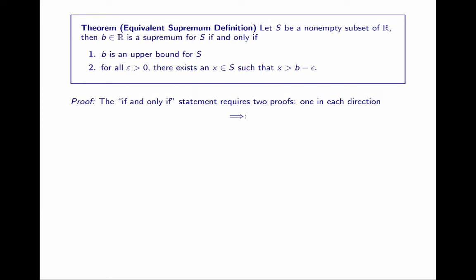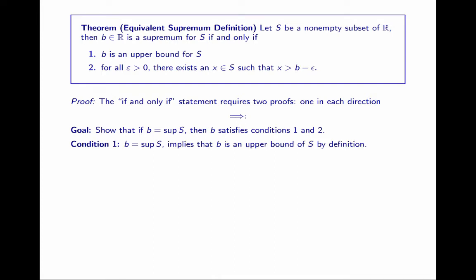First we'll give the proof in the forward direction — we're going to show that if B is a supremum according to the original definition, then B must satisfy conditions one and two. Condition one is pretty straightforward. If B is a supremum — the way to read that is B is a least upper bound — then by definition, by the original definition of a supremum, B is an upper bound. So condition one is straightforwardly dispatched. Now, for the sake of contradiction, let B be a supremum and suppose condition two is false. We're going to show that it's impossible for B to be a supremum and for condition two simultaneously to be false.